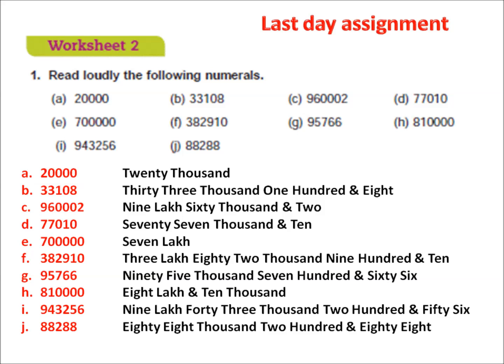Please check it. A. 20,000. B. 33,108. C. 9,60,002. D. 77,010. E. 7,003. F. 3,082,910. G. 95,766. H. 8,10,000. I. 9,43,256. J. 88,288. All of you have understood?